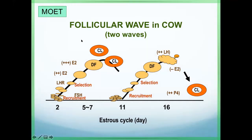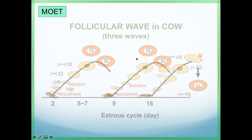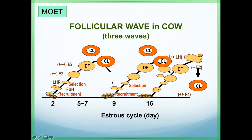For MOET technology, we have to know the follicular dynamics of the cows. In cows, they have two types: a two-wave follicular dynamic and a three-wave follicular dynamic. We have to know when to start FSH stimulation and then trigger ovulation using hCG or LH. We cannot stimulate the animal at just any time of the cycle.